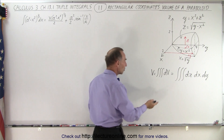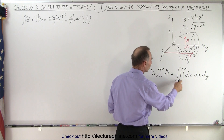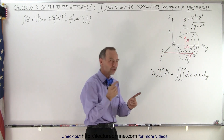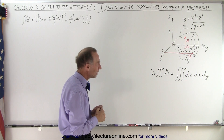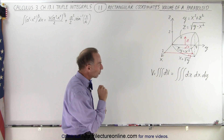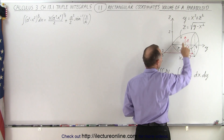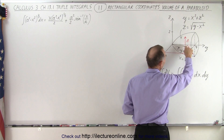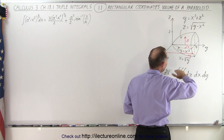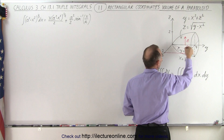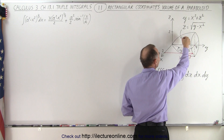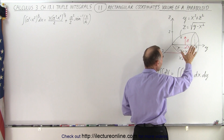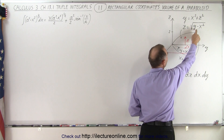Now the volume is going to be the triple integral of dV, which is the triple integral of dz dx dy. I've interchanged the dx and dy because we're going to first integrate in the z direction. Notice that if I start from the xy plane on up, the height of that surface will depend upon what the values of x and y are, so my limits are going to depend on y and x.